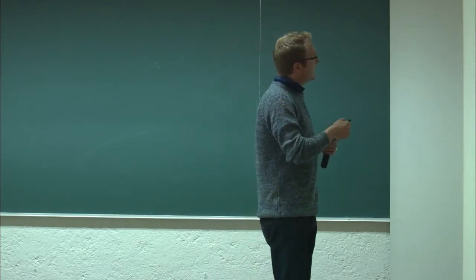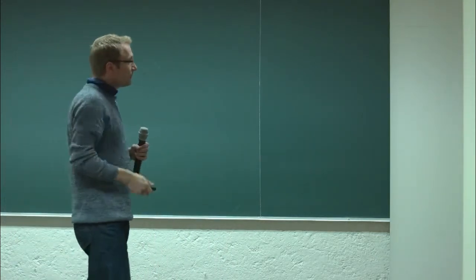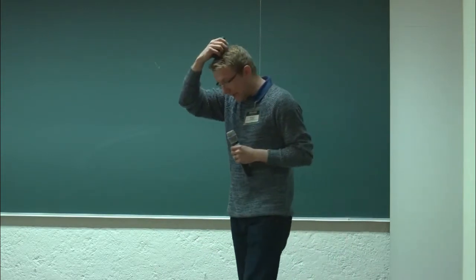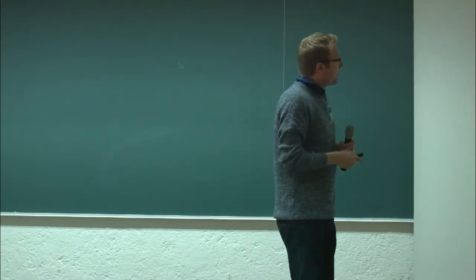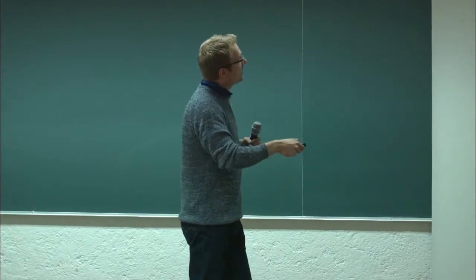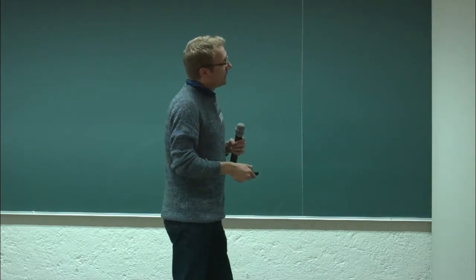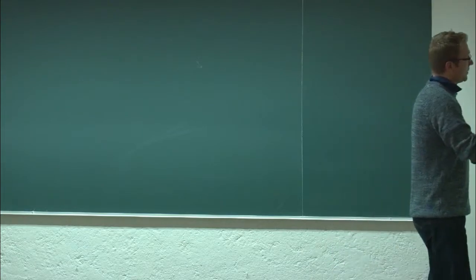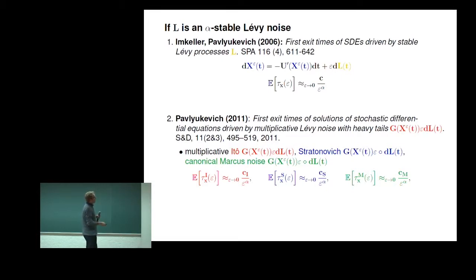When you replace Brownian motion by something like an alpha-stable process, you lose a lot of properties. First of all, you don't have continuous paths anymore — you have jumps, and the distributions only have moments up to a certain order given by the index alpha. The first work in this direction was by Peter Imkeller and Ilya Pavlyukevich, where you get out that the first exit times behave rather differently — they behave polynomially. You have some constant which includes the knowledge of the domain in terms of the stable state and the Lévy measure, and you have asymptotics in epsilon which is a power — one over the alpha power of the noise intensity.